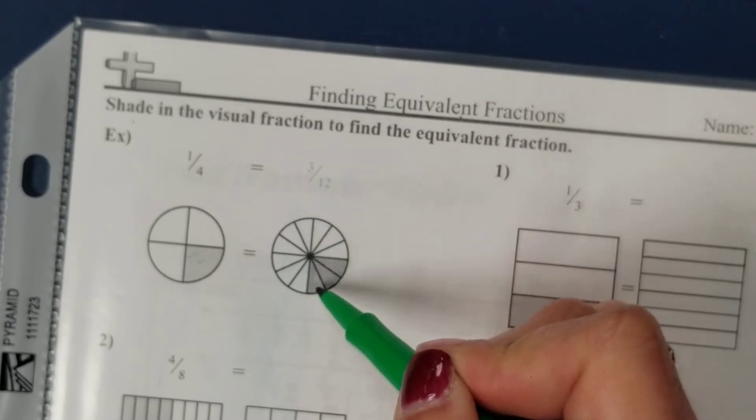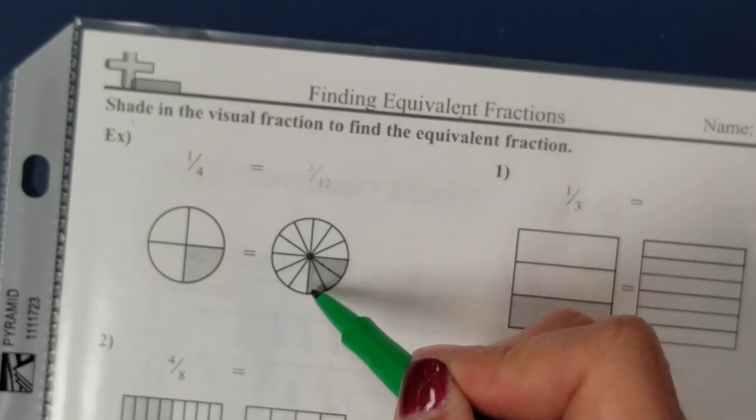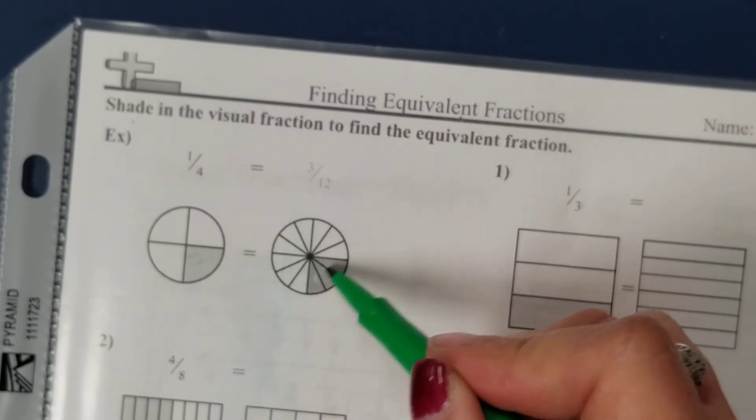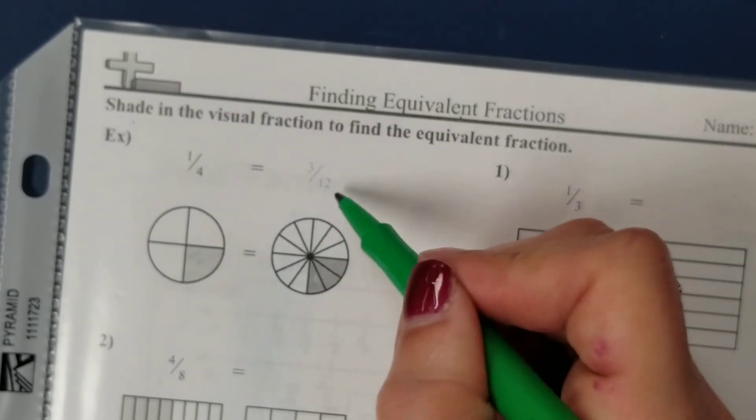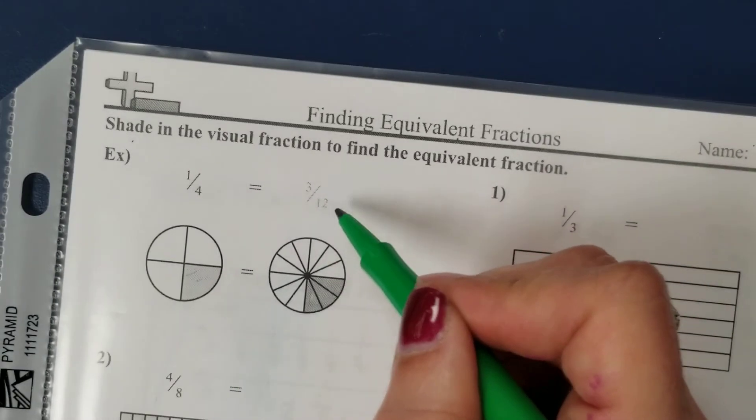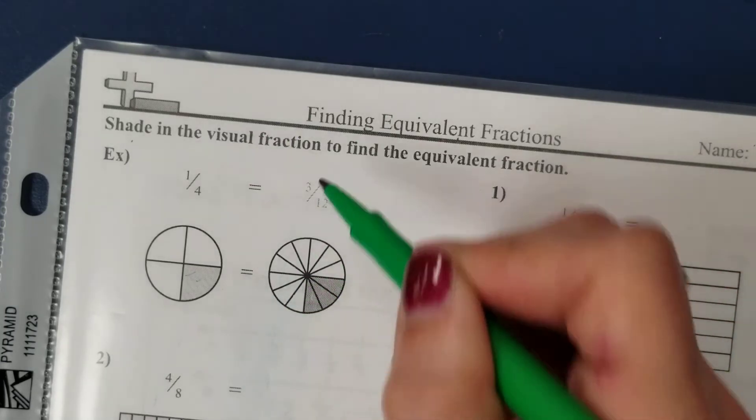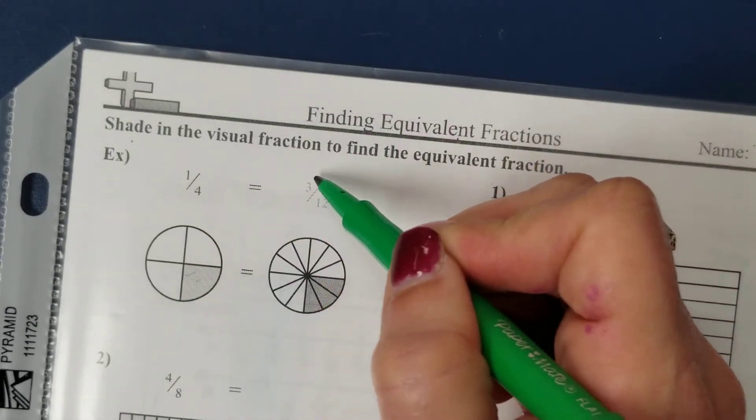Now they've broken the circle into twelve equal parts but they've shaded this group which exactly matches this over here as well. So if we look at our fraction here, it has a twelve in the denominator because it's twelve equal parts, and one, two, three of them have been shaded, so we have the fraction three twelfths.